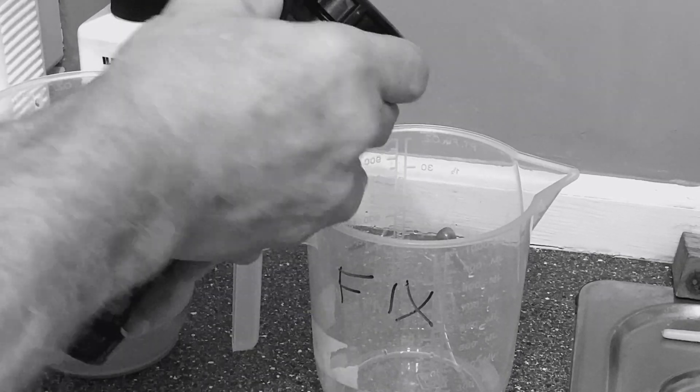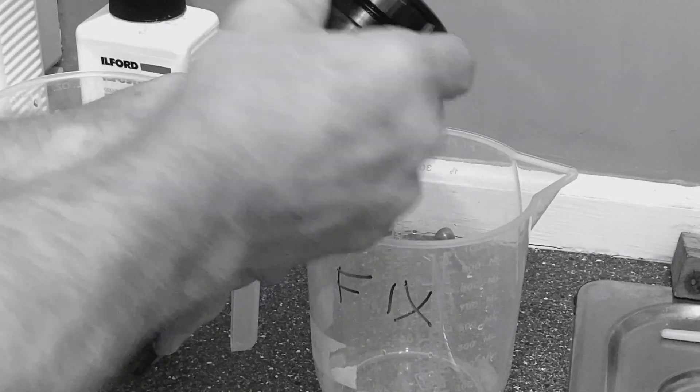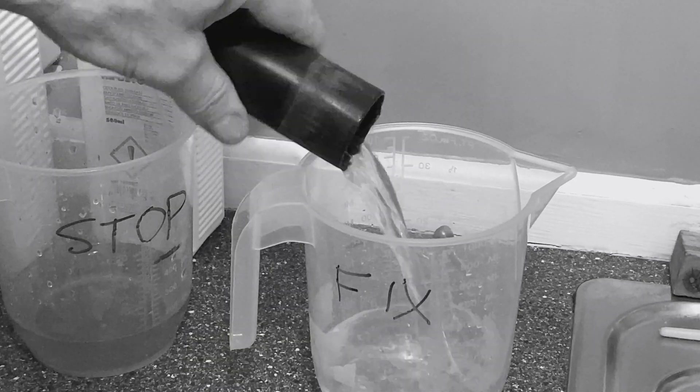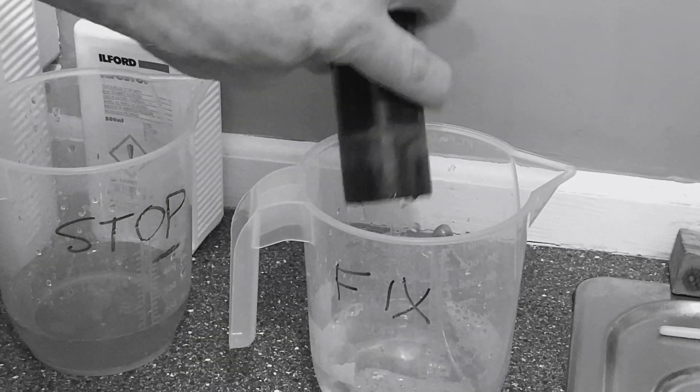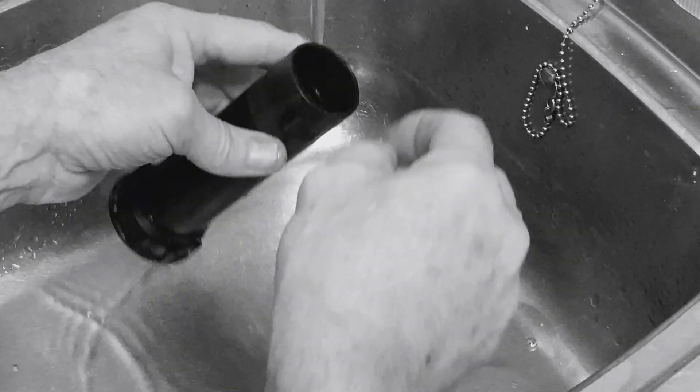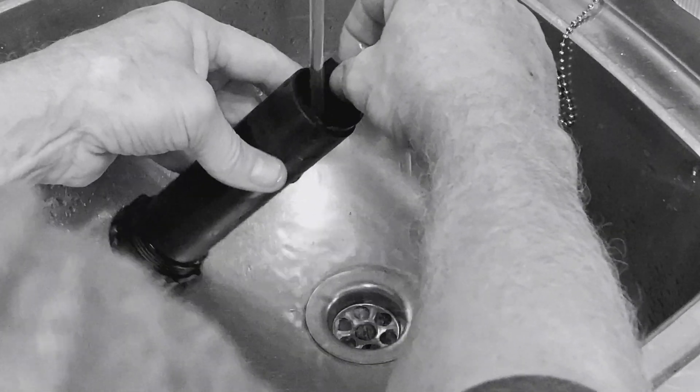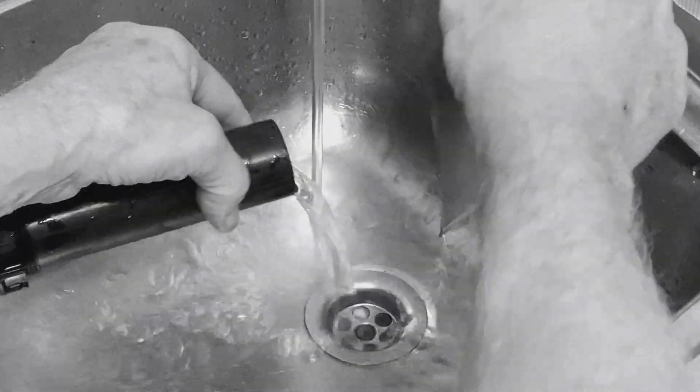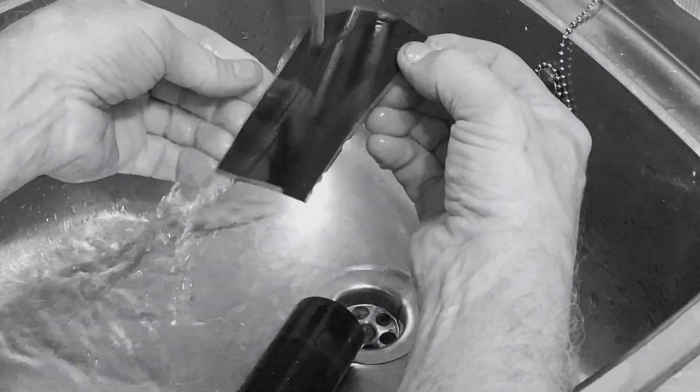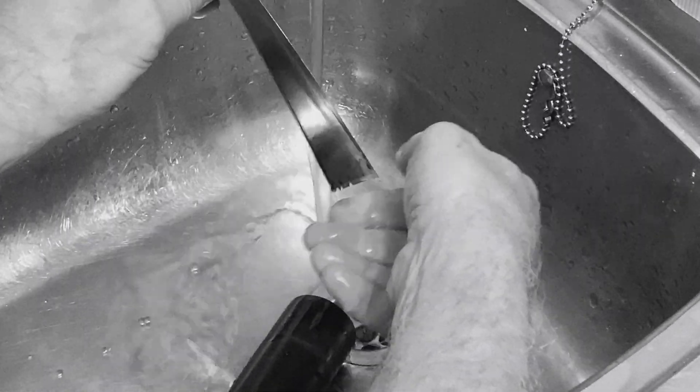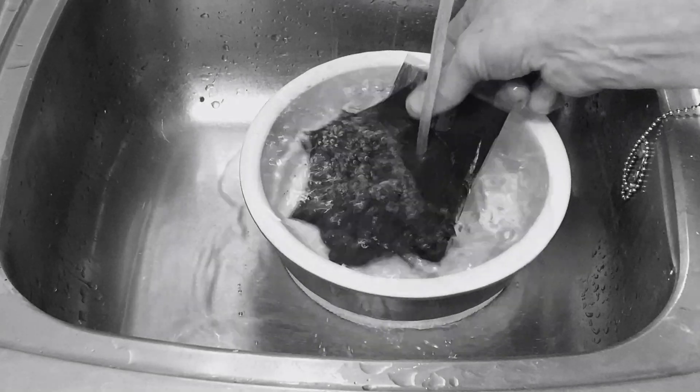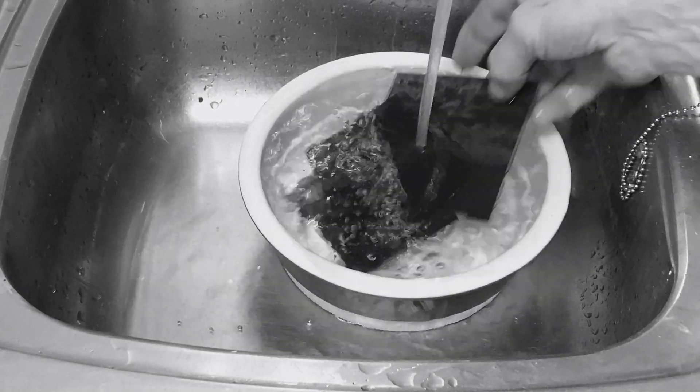At this point the cap can be completely removed from the tube and the fixer poured out. I just give the film a quick rinse with water. This helps slide the film out of the tube. And then it's on to a final rinse.